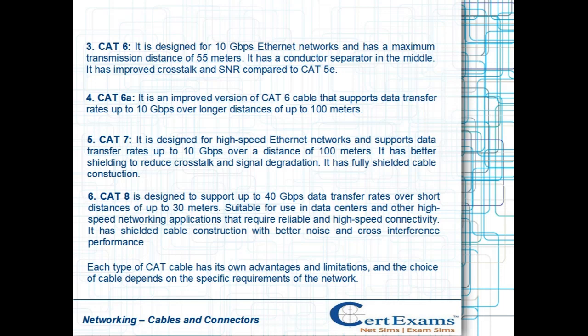CAT 8 is designed to support up to 40 gigabits per second data transfer rates over short distances of up to 30 meters. It is suitable for use in data centers and other high-speed networking applications that require reliable and high-speed connectivity. It has shielded cable construction with better noise and cross-interference performance.